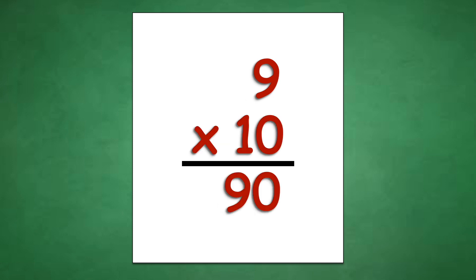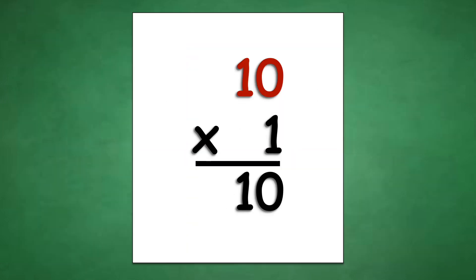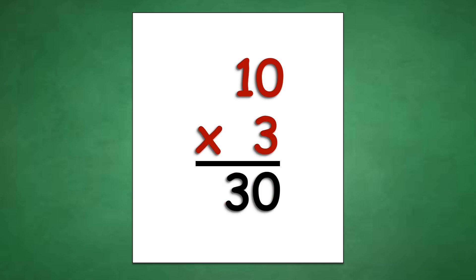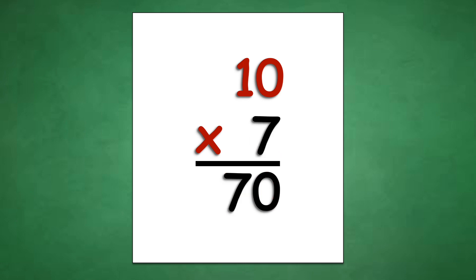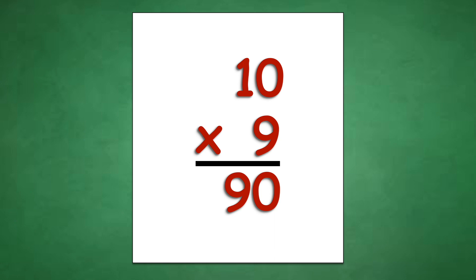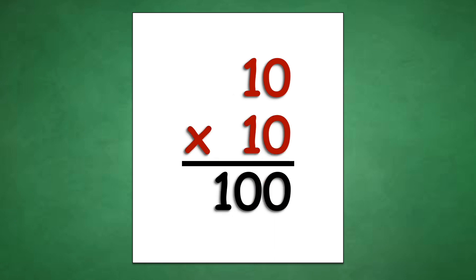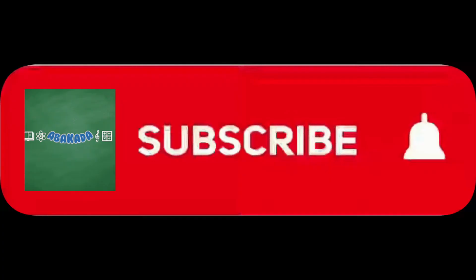Table of 10: 10 times 1 equals 10, 10 times 2 equals 20, 10 times 3 equals 30, 10 times 4 equals 40, 10 times 5 equals 50, 10 times 6 equals 60, 10 times 7 equals 70, 10 times 8 equals 80, 10 times 9 equals 90, 10 times 10 equals 100. Thank you for watching.